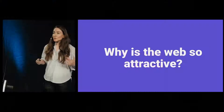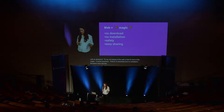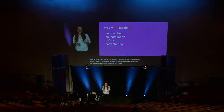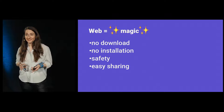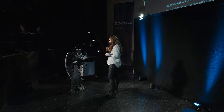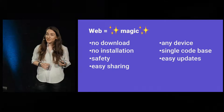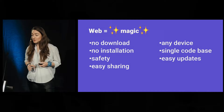But why would we want to do all this stuff on the web? Why is the web so attractive? To me, the beauty of the web is that it's kind of like magic — it works anywhere. There's no download and no installation. Browsers have security properties that keep code running in them from messing with your system — there's a thing called a sandbox. And my favorite: sharing on the web is as easy as it gets. Links are just clickable strings that you can put anywhere, and we all know that's not how app stores work. So the web is the only truly universal platform that makes your code accessible on any device.